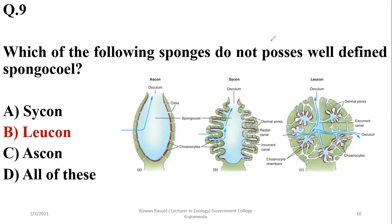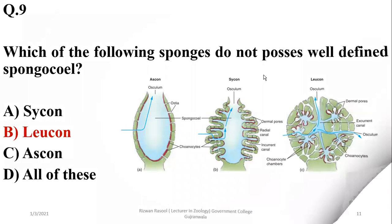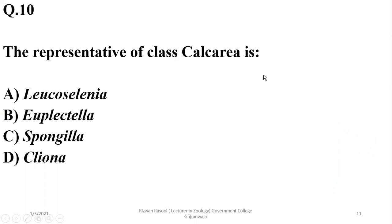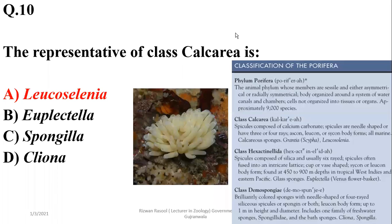Number ten: The representative of class Calcarea is Leucosolenia. Leucosolenia has erect tubules and is a representative member of class Calcarea, along with Grantia or Scypha.